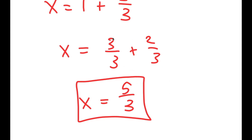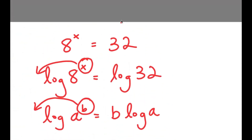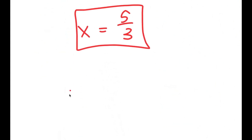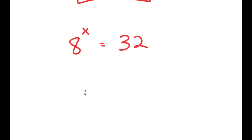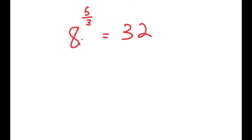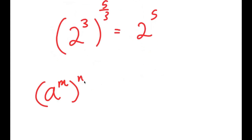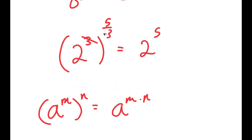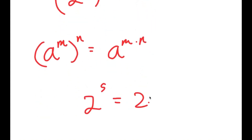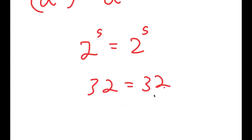Now how do we know this is the right answer? Going back, we have 8 to the power of x equals 32, and we're plugging in 5 over 3. So we get 8 to the power of 5 over 3 is equal to 32. Now 8 is the same thing as 2 to the power of 3, so I get 2 to the power of 3 to the power of 5 over 3 equals 32, which equals 2 to the power of 5. Using the rule a to the power of m to the power of n equals a to the power of m times n, the 3s cancel out and I get 2 to the power of 5 equals 2 to the power of 5, or 32 equals 32. This confirms the answer is correct.